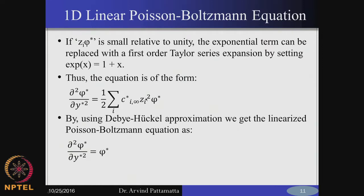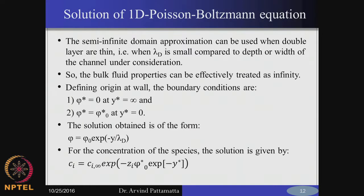Applying this for Na+ Cl- or K+ Cl- simplifies to a specific form. That is how we reduce the non-linear Poisson-Boltzmann equation to a linear Poisson-Boltzmann equation, for which we can find an analytical solution in a straightforward manner. The generic solution will be in terms of exponential plus y star and exponential minus y star. In order to satisfy the condition that phi star should be 0 at y star equal to infinity, the term containing exponential y star should disappear.